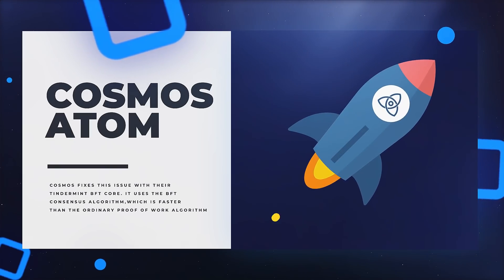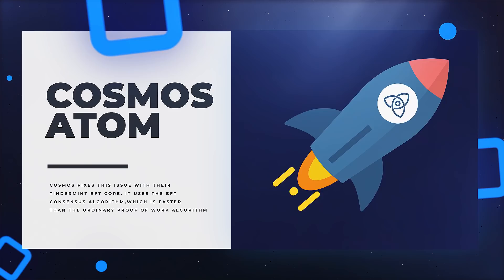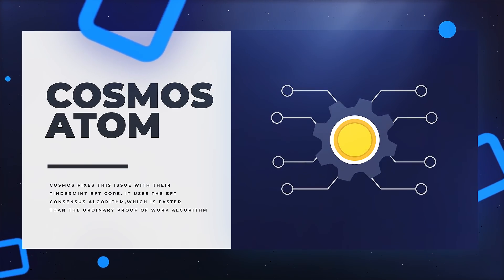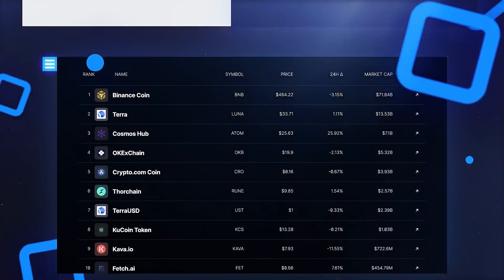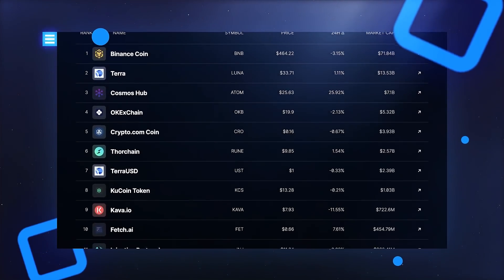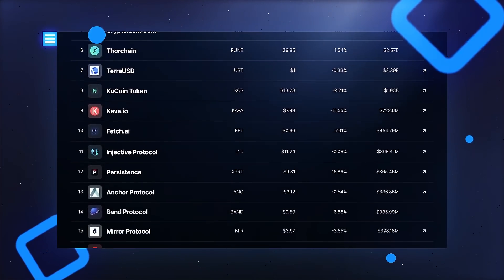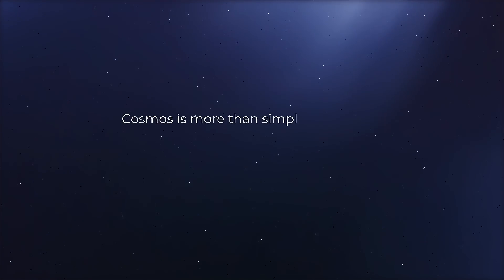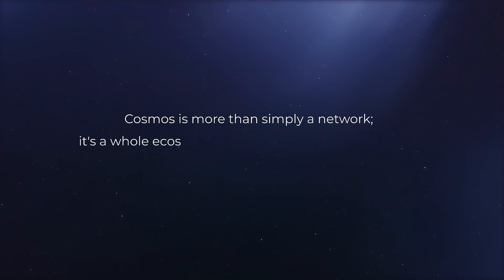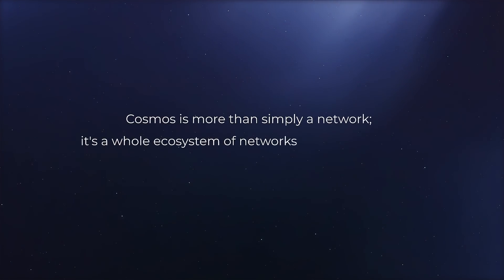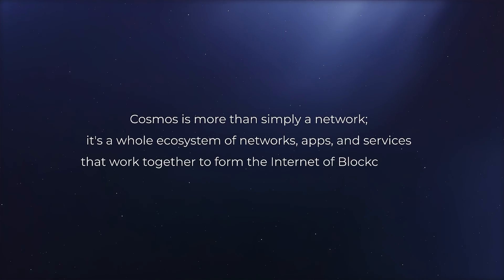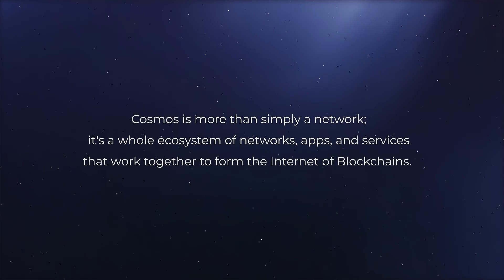Hundreds of chains have been developed with Cosmos Network tools, and thousands of apps and services have been built on top of them. The Cosmos SDK is used to build some of the most popular blockchains, including the Binance Chain and the Terra chain. Cosmos is more than simply a network — it's a whole ecosystem of networks, apps, and services that work together to form the internet of blockchains.